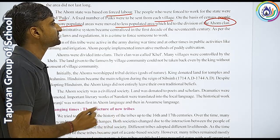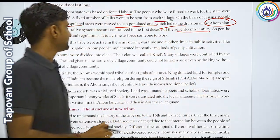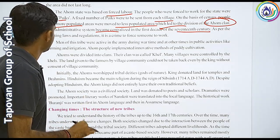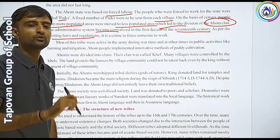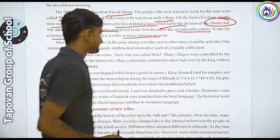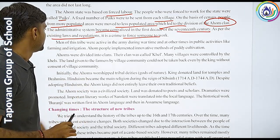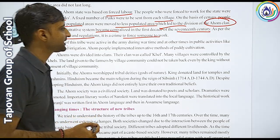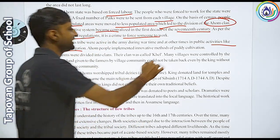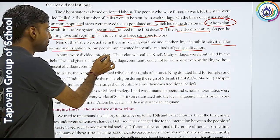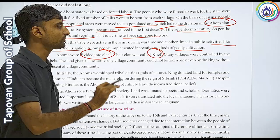The administrative system became centralised in the first decades of the 17th century. As per existing law and regulation, it is a crime to force someone to work. Men of this time were active in the army during wartime and engaged in public activities like farming and irrigation, and paddy cultivation during other times. Ahom society was divided into many clans, and all clans were known by their specific khel.